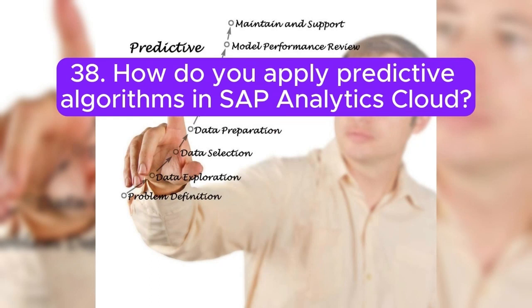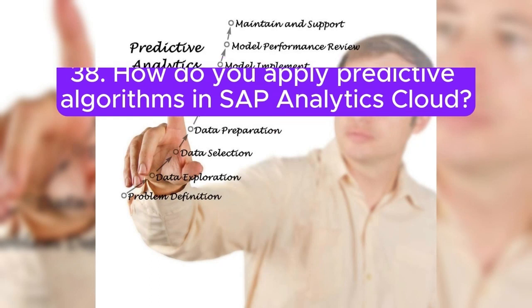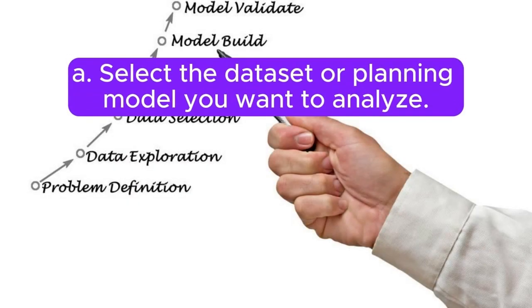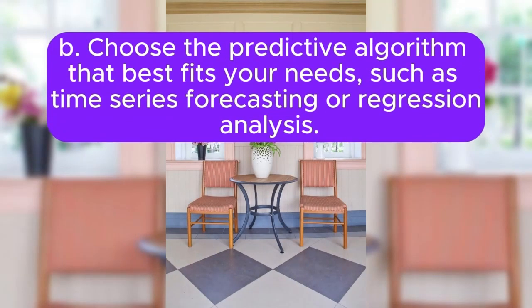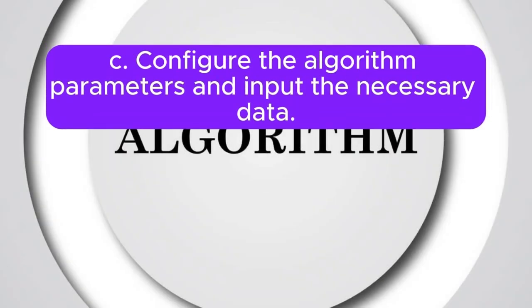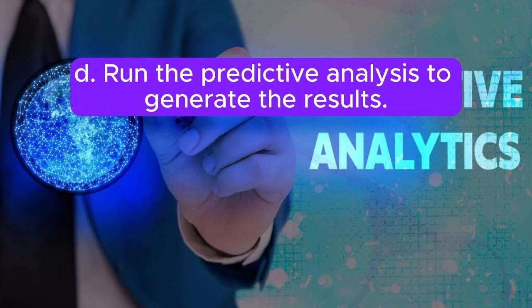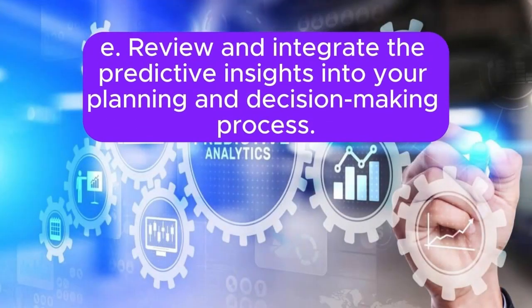Question 38: How do you apply predictive algorithms in SAP Analytics Cloud? Answer: To apply predictive algorithms in SAP Analytics Cloud: A. Select the dataset or planning model you want to analyze. B. Choose the predictive algorithm that best fits your needs, such as time series forecasting or regression analysis. C. Configure the algorithm parameters and input the necessary data. D. Run the predictive analysis to generate the results. E. Review and integrate the predictive insights into your planning and decision-making process.